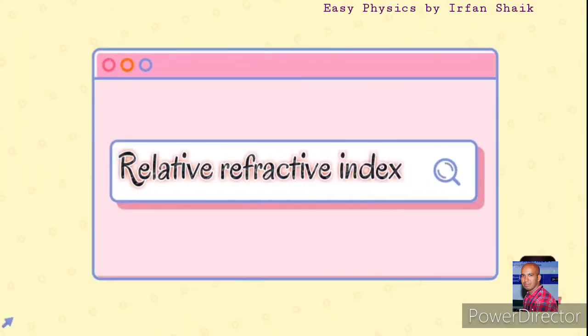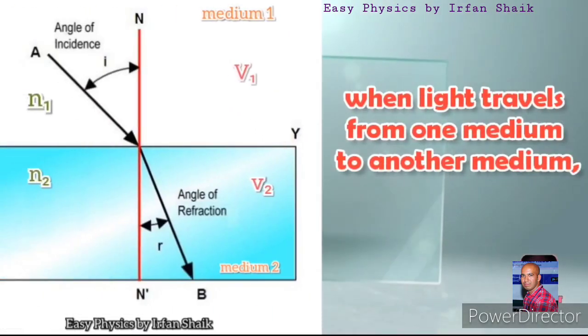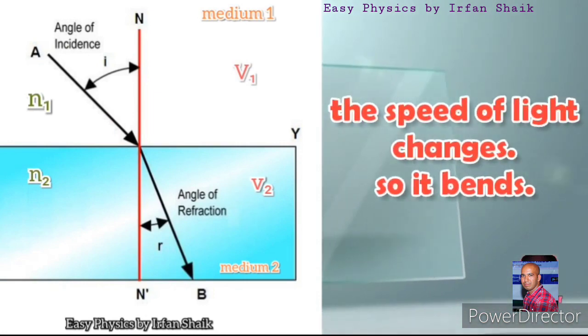Related to Refractive Index. When light travels from one medium to another medium, the speed of light changes, so it changes its direction. That means it bends.